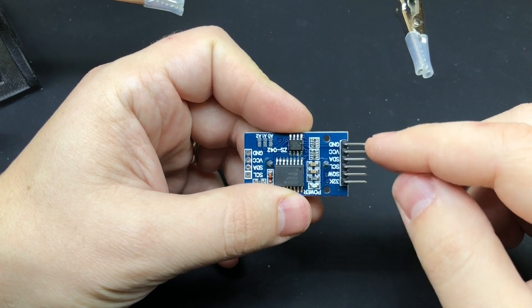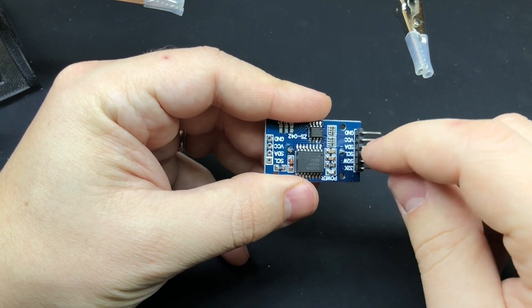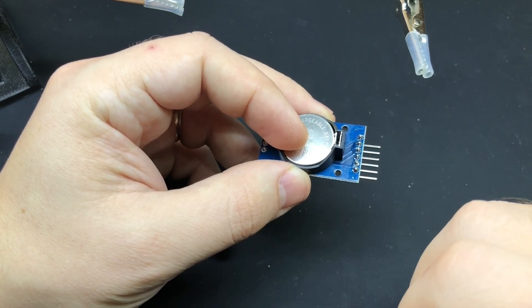I'm going to go ahead and remove these header pins. The easiest way that I found to remove these is to snip the black plastic between each pin, and then you'll be able to pull them out one at a time by heating up the solder on the other side.